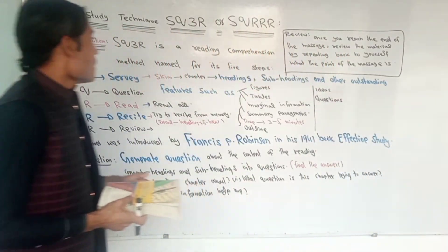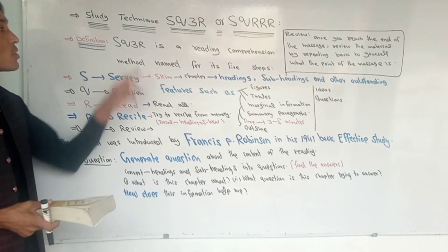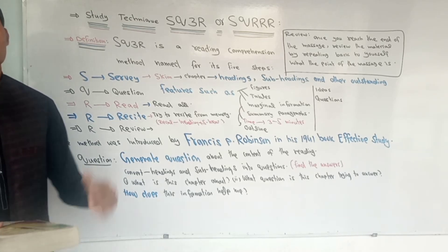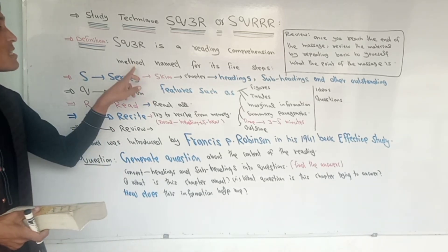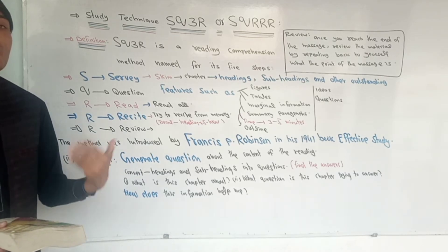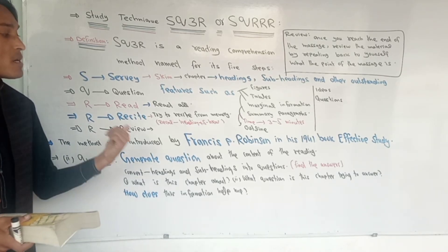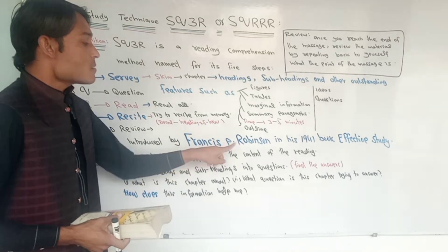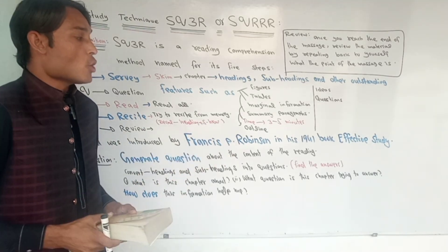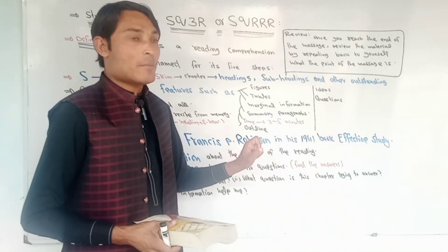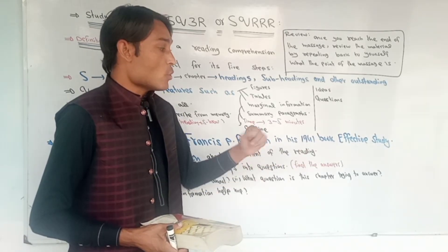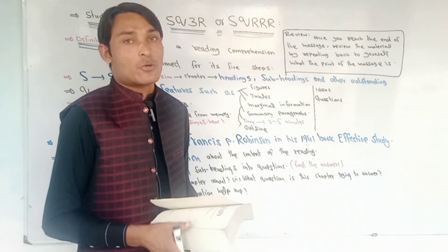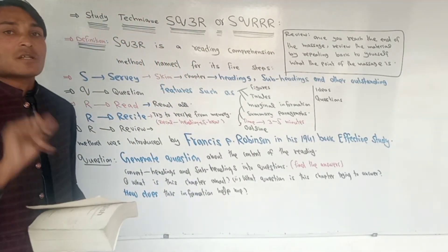Our topic is reading comprehension. Comprehension is the ability to understand. We have five steps in this technique. Before we get into the technique, we should know that it was developed by an educational psychologist, Francis P. Robinson, who introduced it in 1941 in a book called 'Effective Study.'